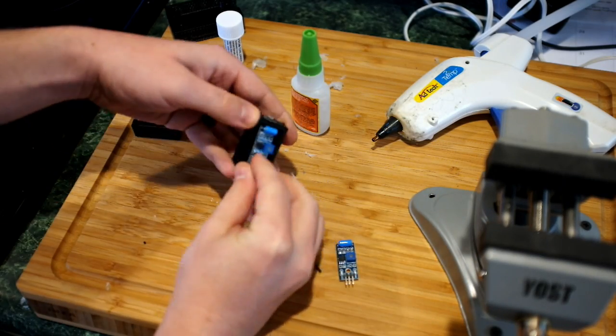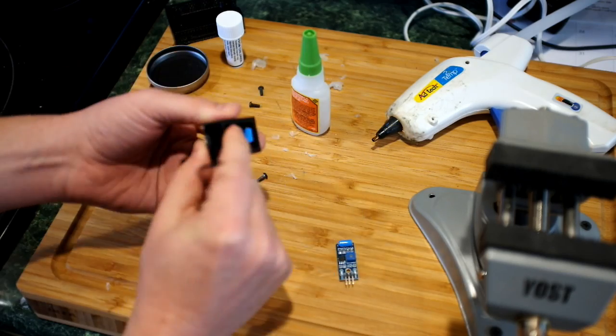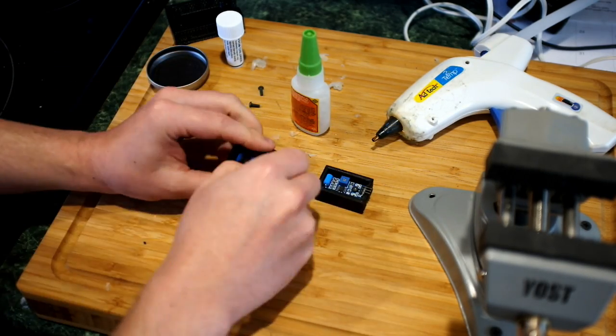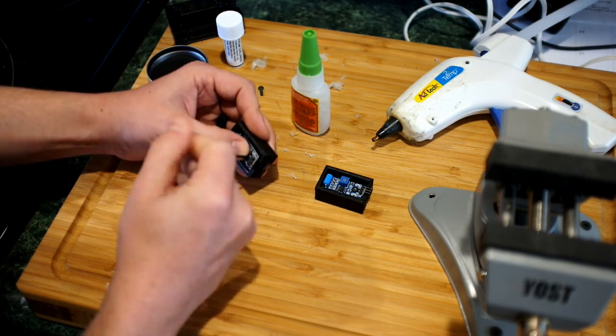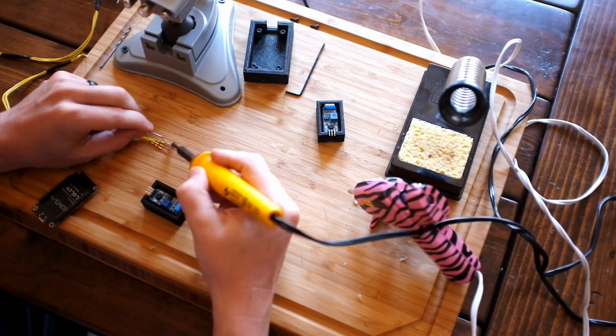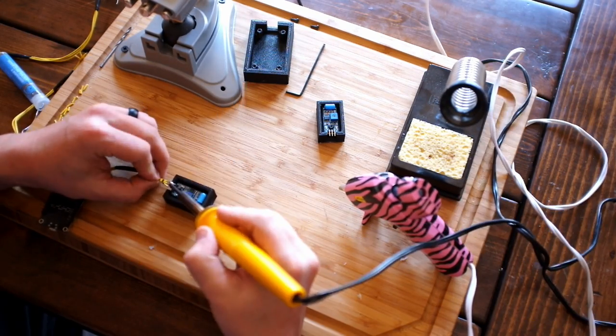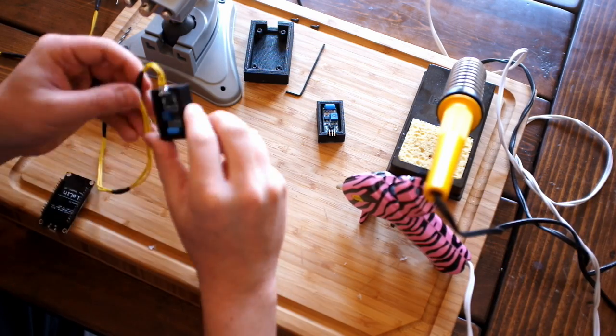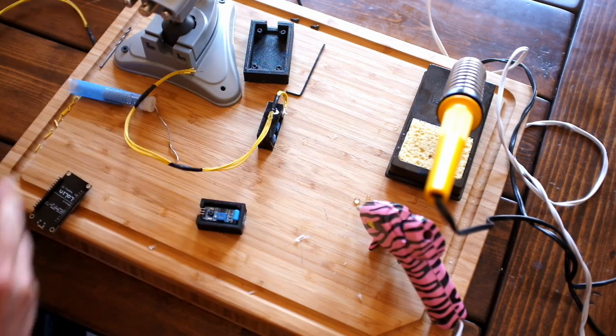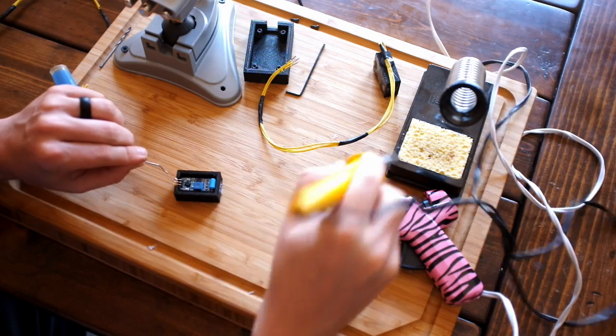The next thing was to attach the switches to the 3D printed cases using some M3 bolts. Then I made a little wiring harness and soldered the ends to the switches. I put a little bit of hot glue to hold the wires to the side and then wrapped it in tape just to make sure there's no stress on those solder joints.